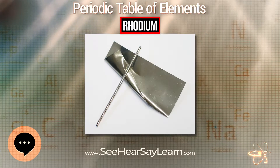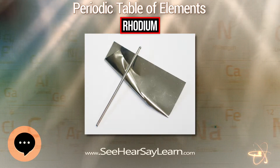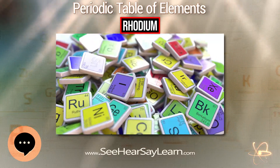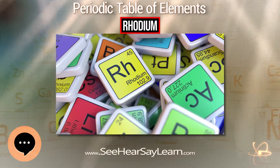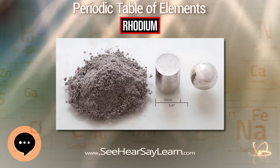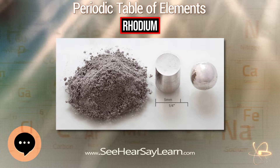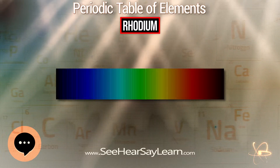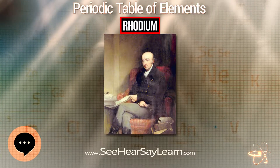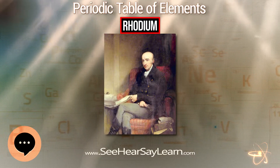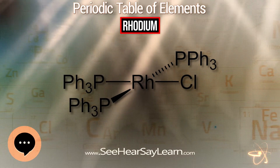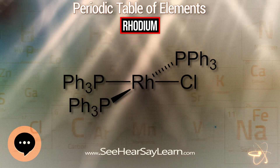After the discovery, the rare element had only minor applications. For example, by the turn of the century, rhodium-containing thermocouples were used to measure temperatures up to 1800 degrees Celsius. The first major application was electroplating for decorative uses and as a corrosion-resistant coating. The introduction of the three-way catalytic converter by Volvo in 1976 increased the demand for rhodium. The previous catalytic converters used platinum or palladium, while the three-way catalytic converter used rhodium to reduce the amount of NOx in the exhaust.